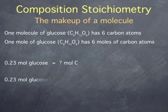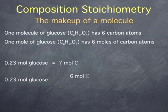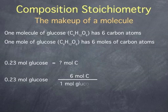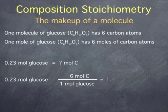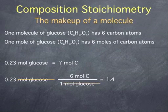0.23 moles of glucose multiplied by the ratio that there are six moles of carbon atoms for every mole of glucose. This gives us a number of 1.4. Moles of glucose cancel and the final units are 1.4 moles of carbon.